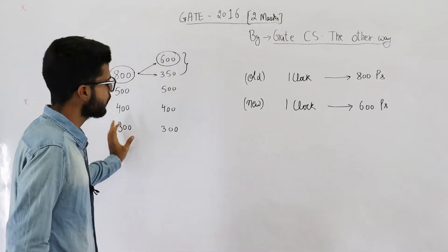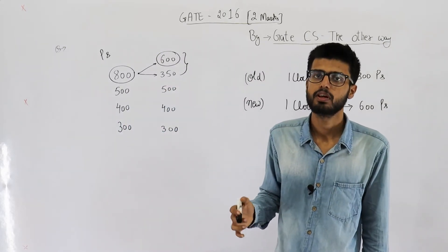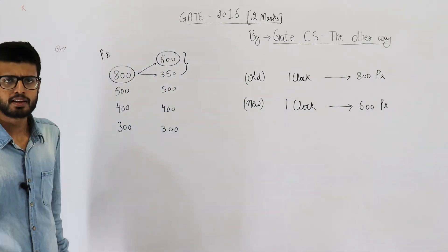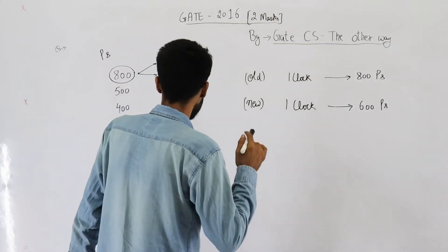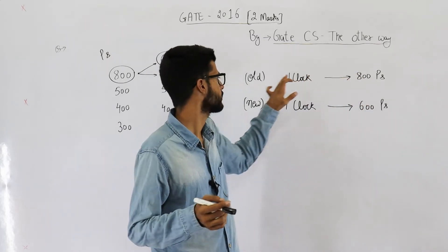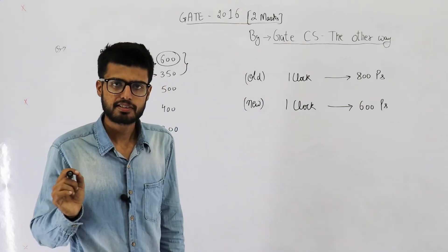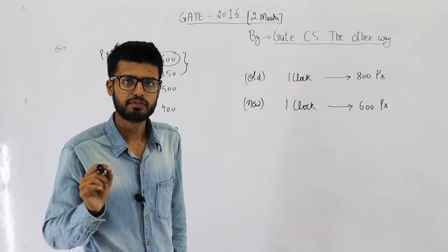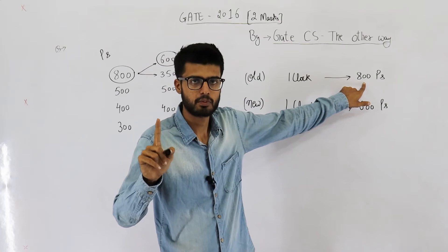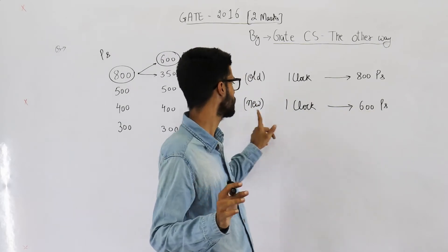Since no specific number of instructions is given, we can safely assume an infinitely large number of instructions. This means we can assume average CPI equals 1, which implies each instruction takes 800 picoseconds on the old processor and 600 picoseconds on the new processor.